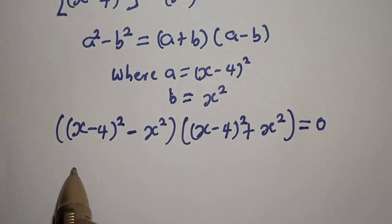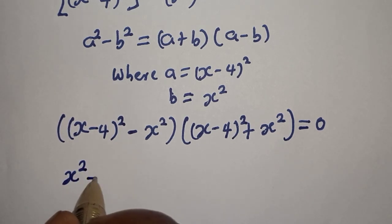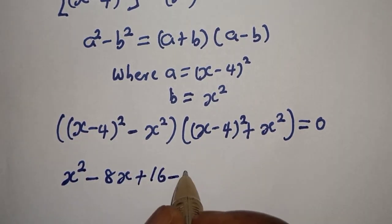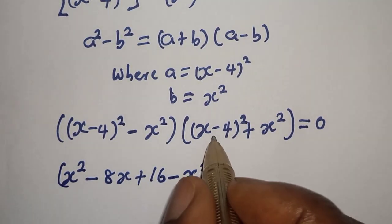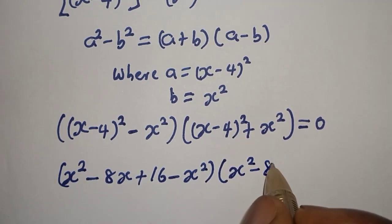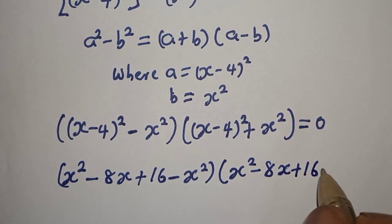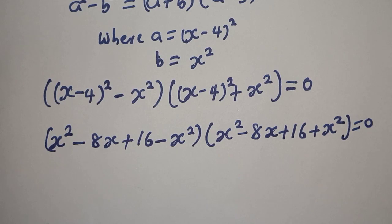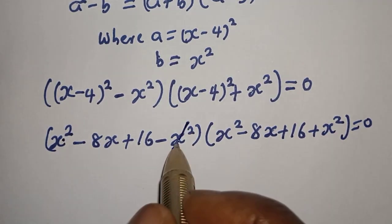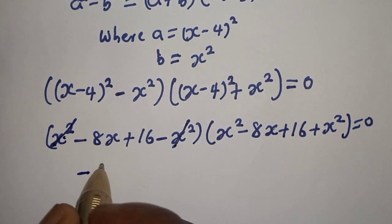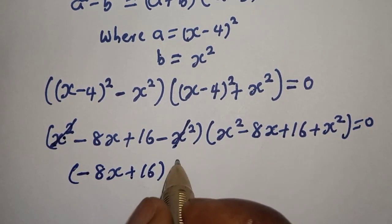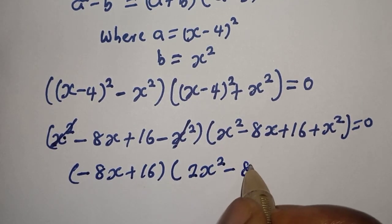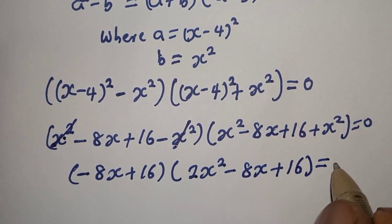Now (S minus 4) squared is S squared minus 8S plus 16, then minus S squared. Multiplied by: (S minus 4) squared is S squared minus 8S plus 16, then plus S squared, is equal to 0. From here, S squared minus S squared cancels. We are left with minus 8S plus 16, multiplied by 2S squared minus 8S plus 16, is equal to 0.